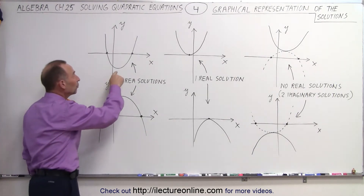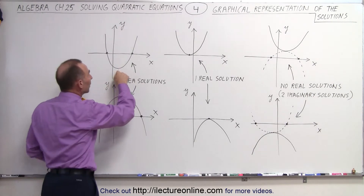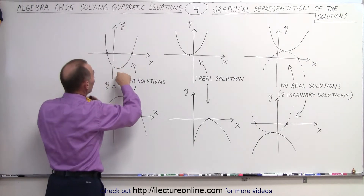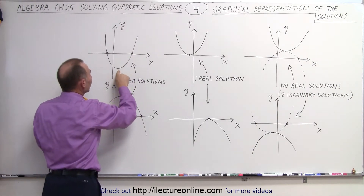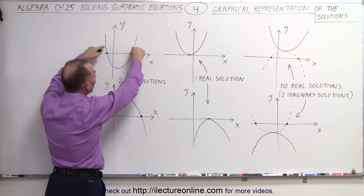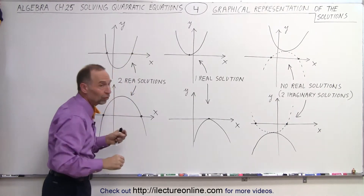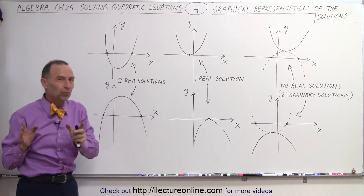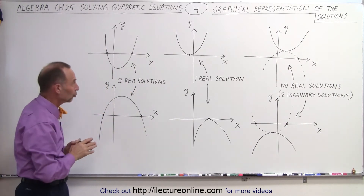If the lowest point in the parabola, when it opens upward, is below the x-axis, you can see there will be two points where it crosses the x-axis, so therefore there will be two real solutions.